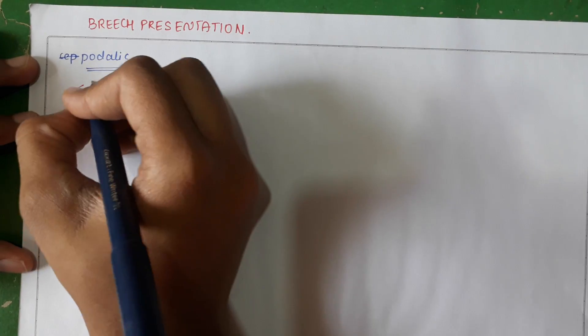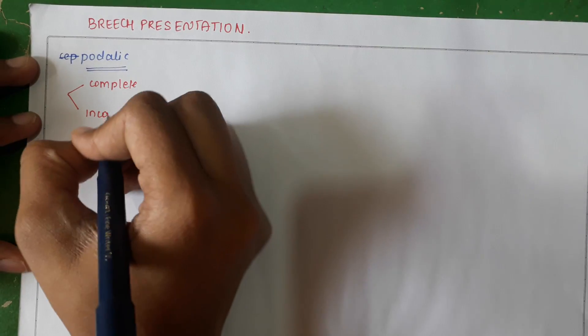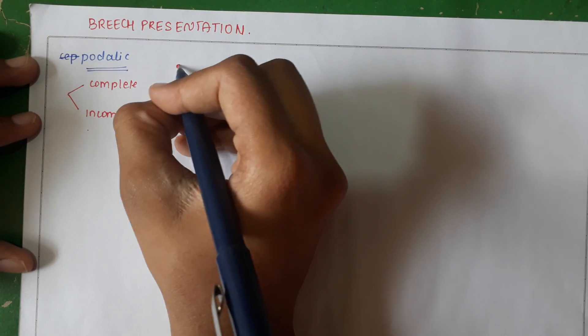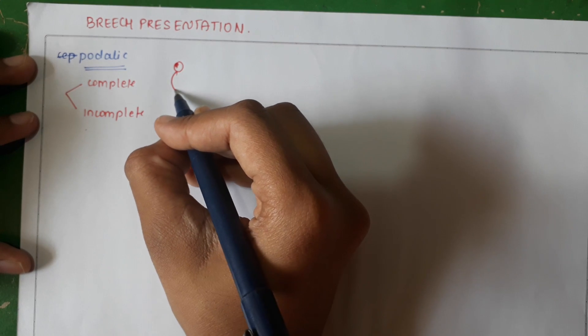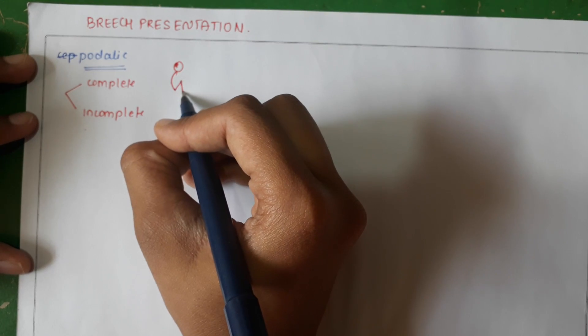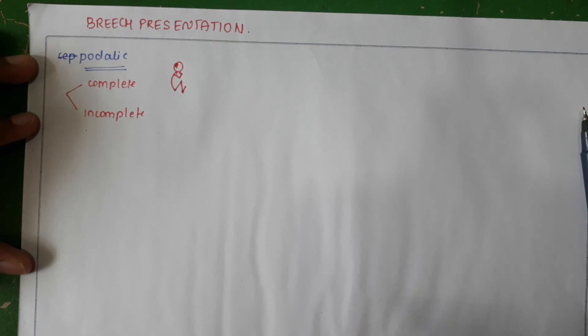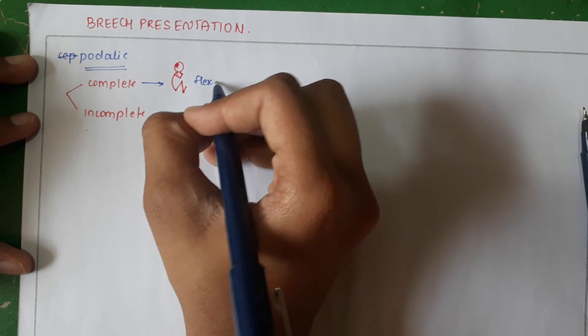There are important types of Breech which you need to know before knowing the mechanism of labor. Basically, divide it into complete and incomplete. If there is flexion at the hip joint, flexion at the knee joint, flexion at the ankle joint, and flexion at all the other joints, then this Breech is called a complete Breech or a flexed Breech.